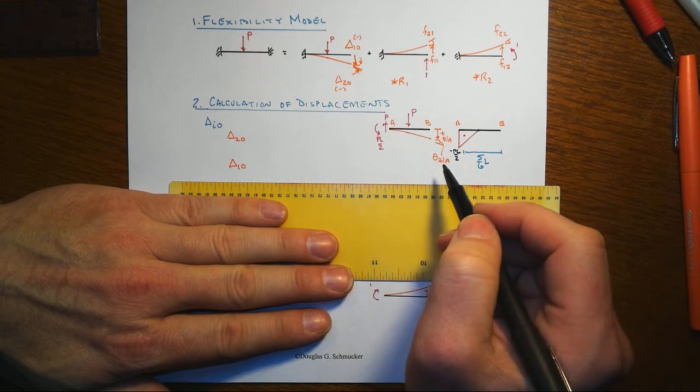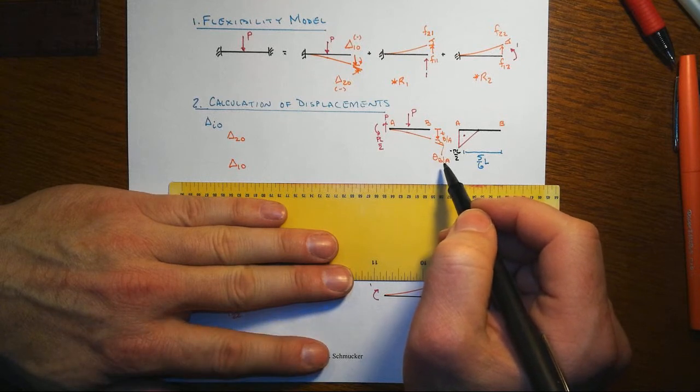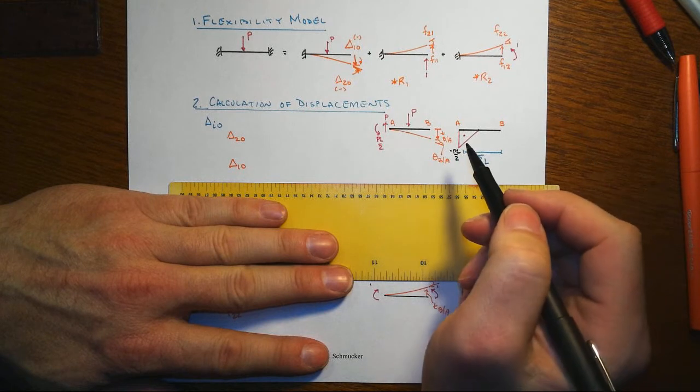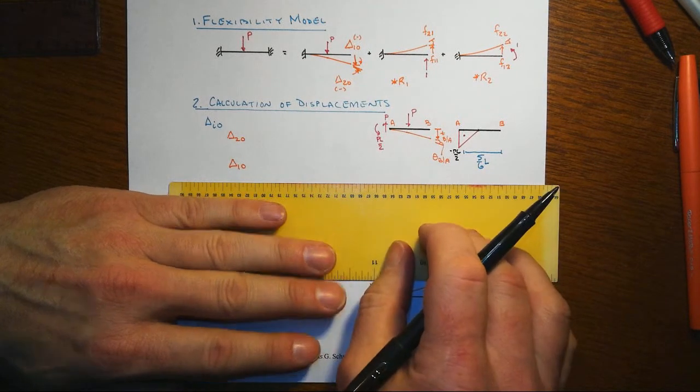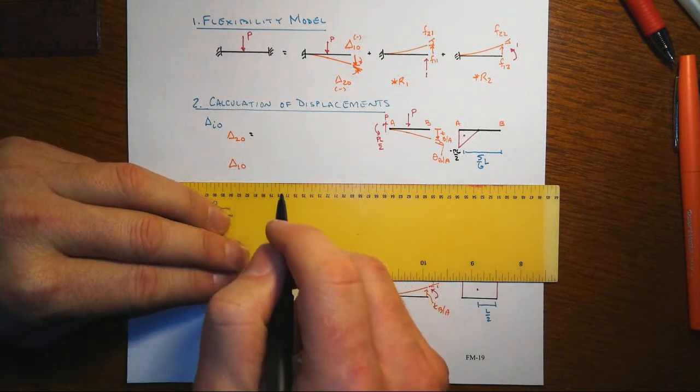For a reason that you'll see here in just a little bit, I'm going to actually start with the rotation, as opposed to numerically the degrees of freedom and the directions that we've set up. Delta 2O is the rotation at the end of the beam, and that's going to be equal to the area under the M over EI diagram.